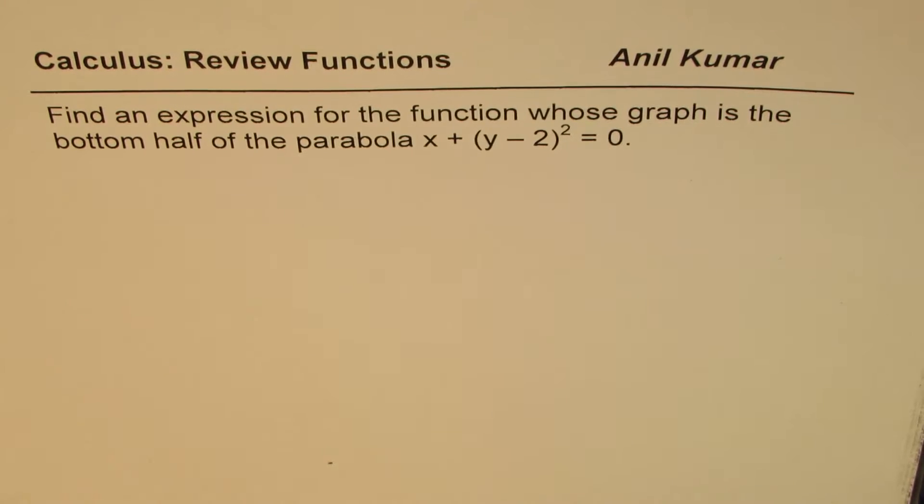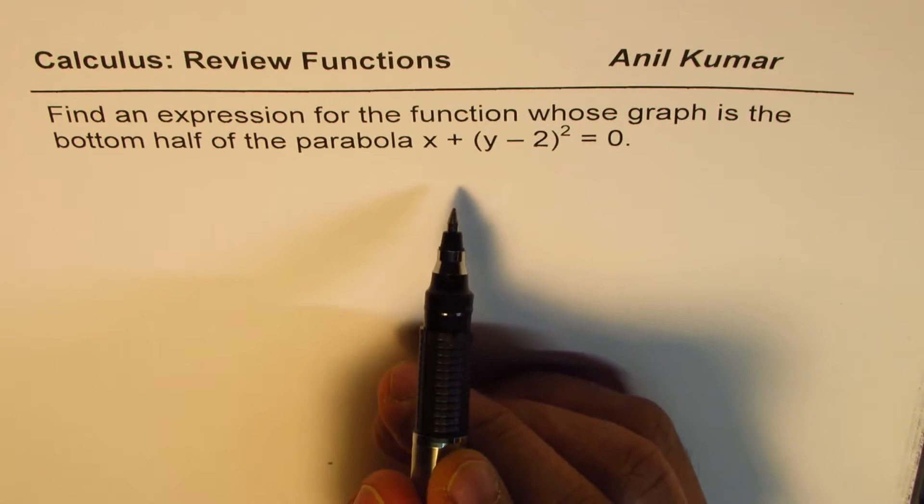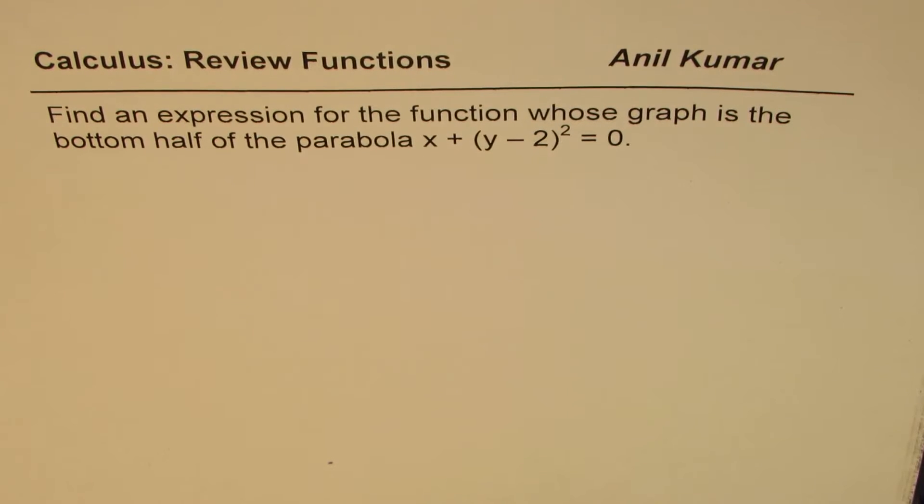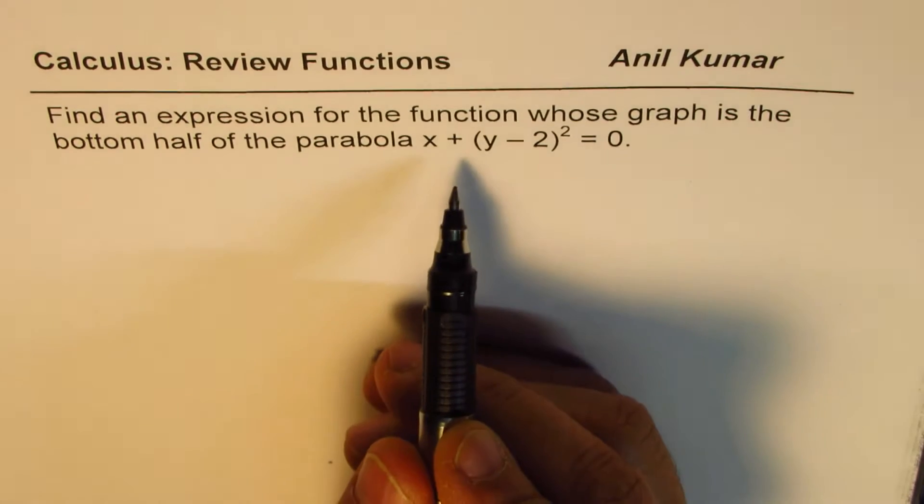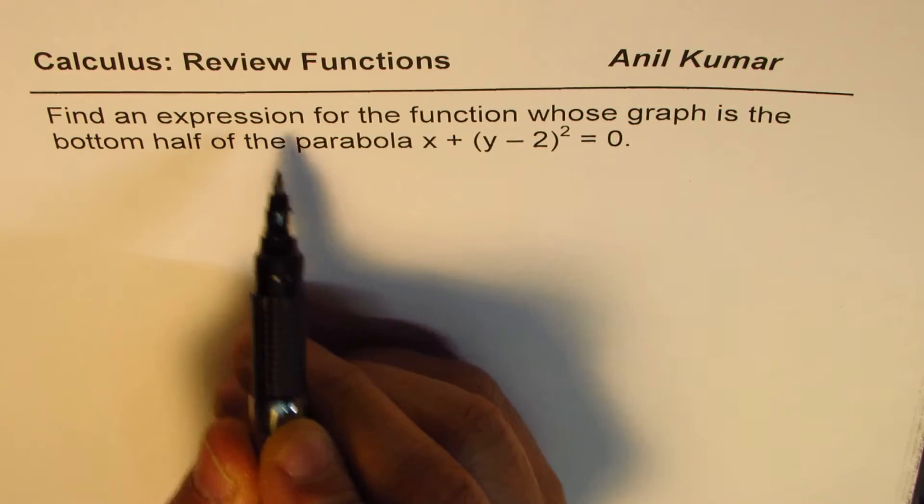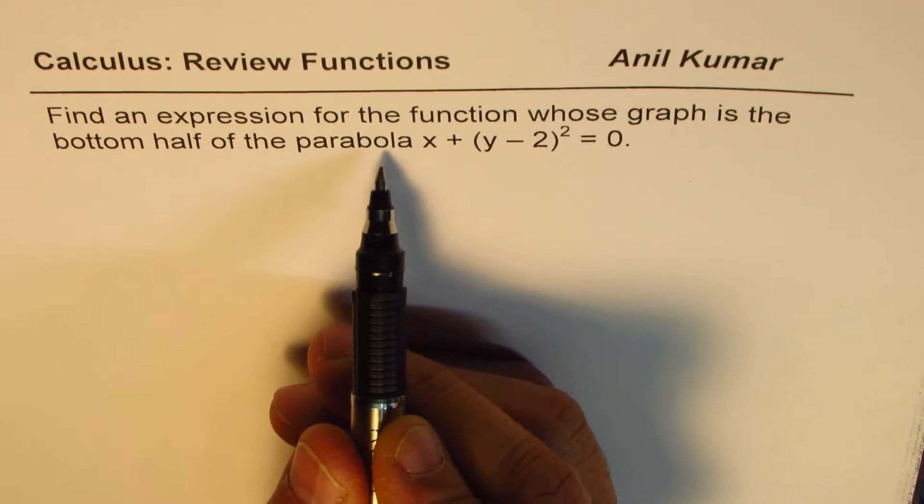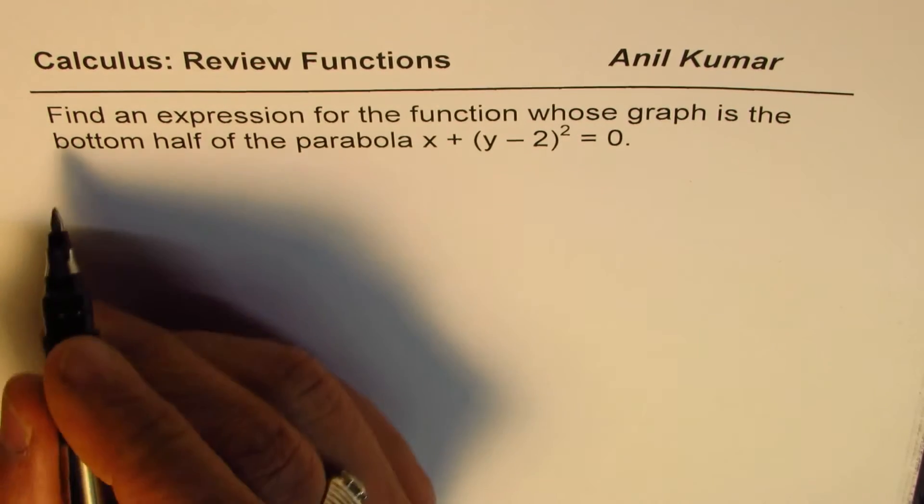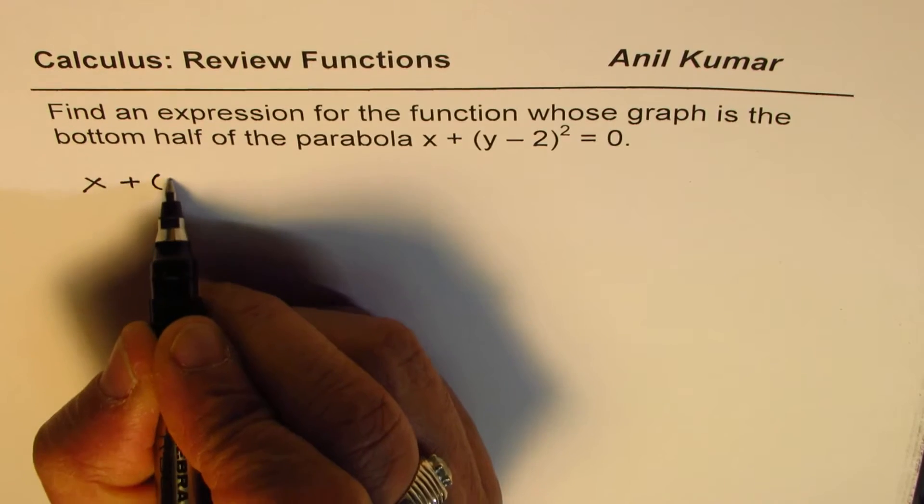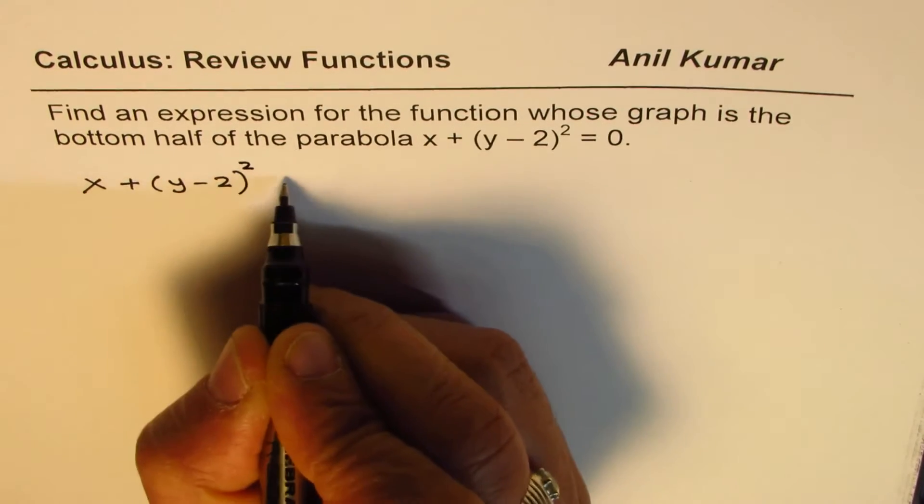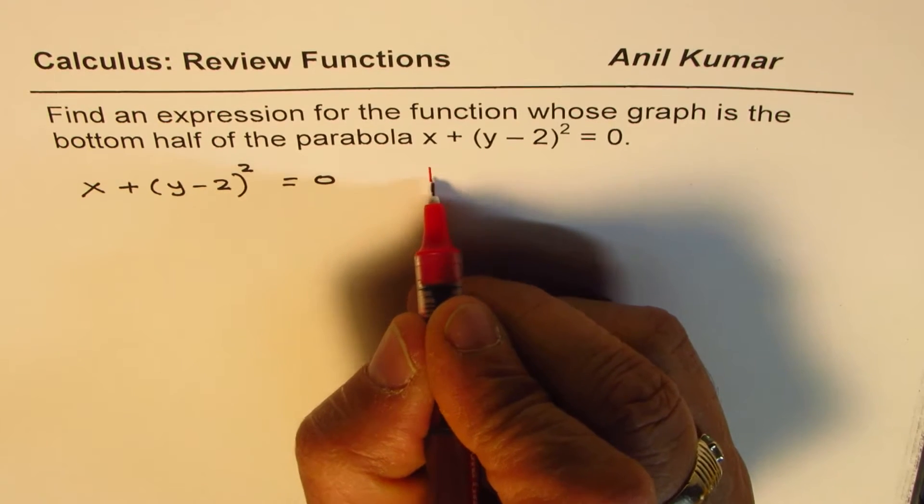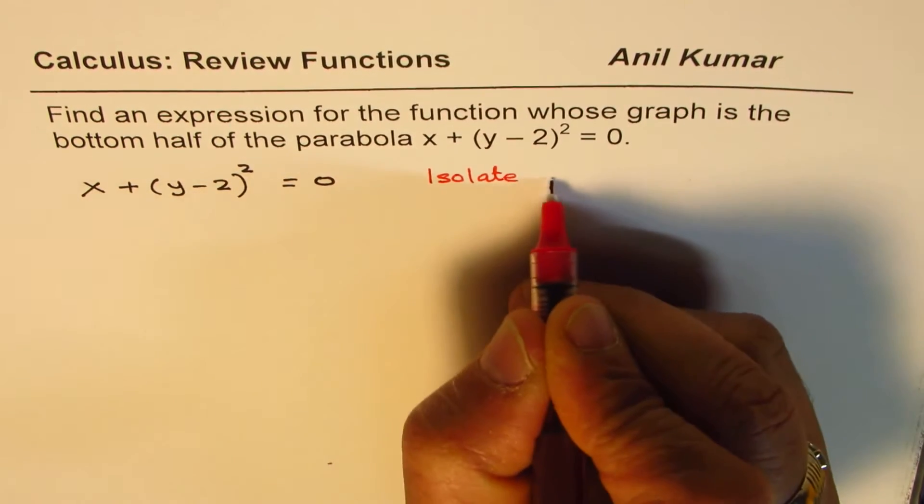Now this example is very tricky. We have combined these terms, and when we're saying function you need to really isolate y and write your expression. Let's read this question once again. It says find an expression for the function whose graph is the bottom half of the parabola. The idea here is to understand how to isolate y.